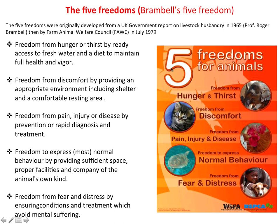In 1965, Professor Bramble gave the five freedoms for animals used in study. These five freedoms are: freedom from hunger and thirst, freedom from discomfort, freedom from pain, injury, and disease, freedom to express normal behavior by providing sufficient space, and freedom from fear and distress. These five freedoms should be provided in each and every institute where you are working with animals.